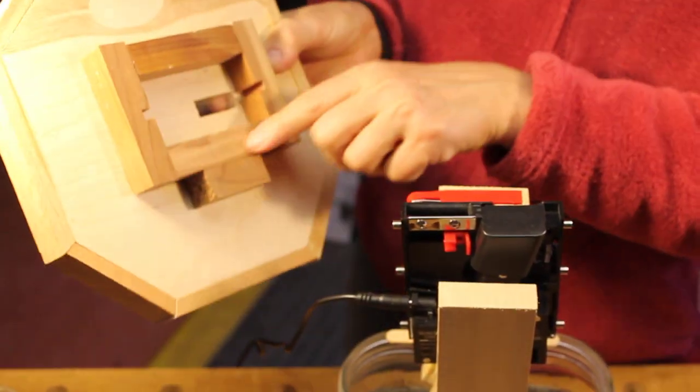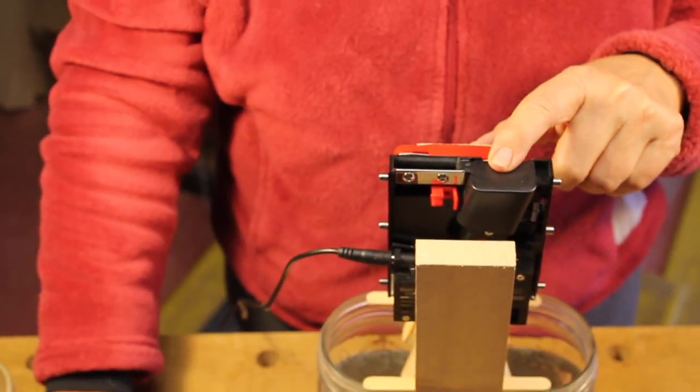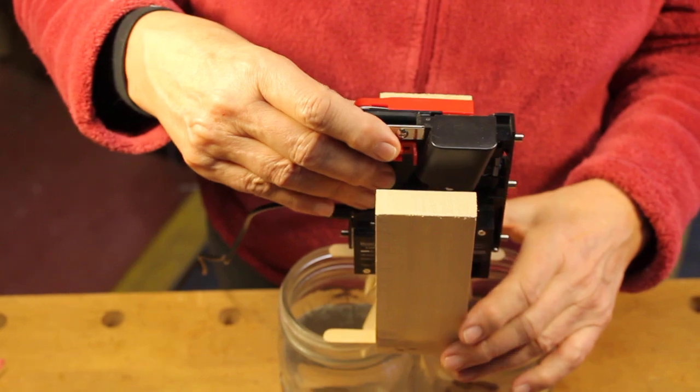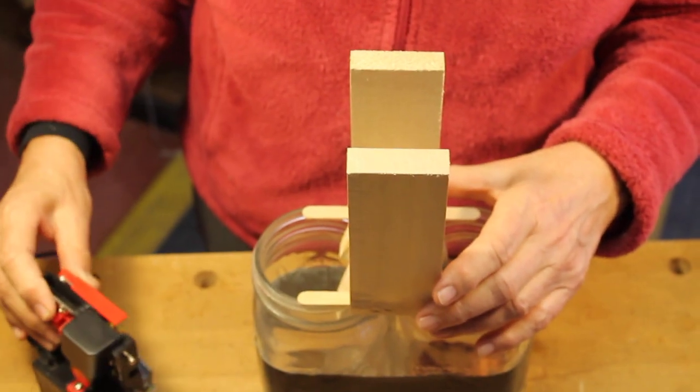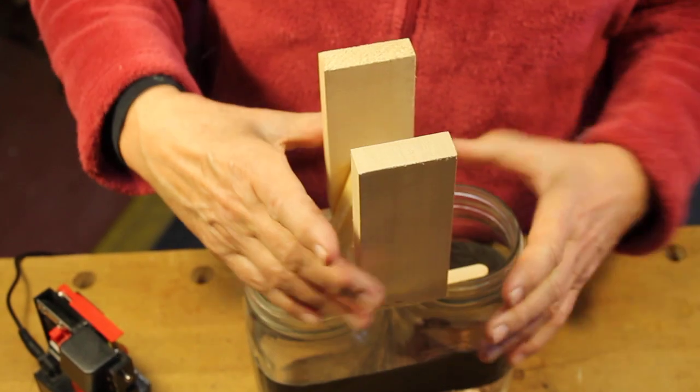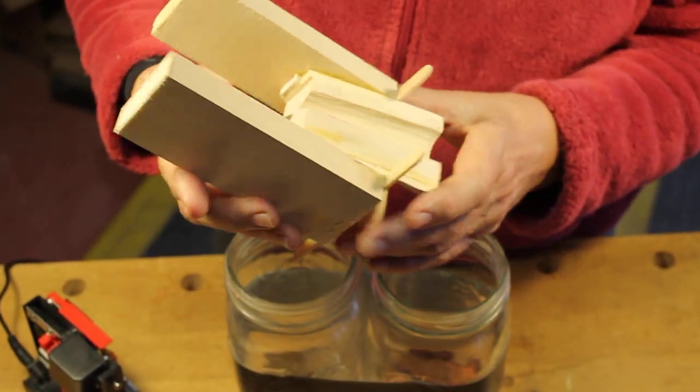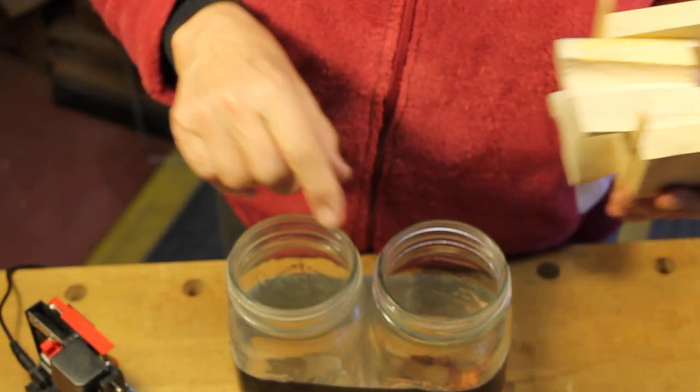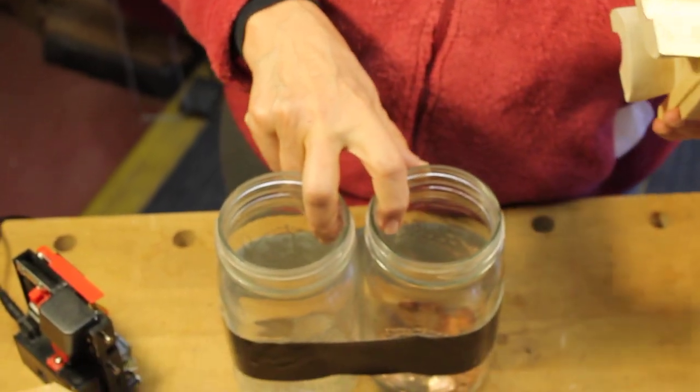So this keys into the top of our little cheapy coin sorter. And the little cheapy coin sorter keys right into this little diverter here, which was hand carved, just because I happen to be a wood carver. And it diverts it into the two wide mouth canning jars.